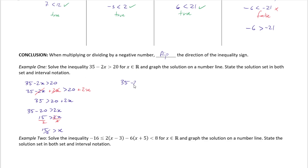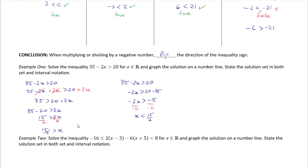Alternatively, starting from 35 − 2x > 20, subtract 35 from both sides to get −2x > 20 − 35, which is −2x > −15. Now divide both sides by −2 — and because we're dividing by a negative number, we flip the inequality sign — giving x < 15/2. Either way, we arrive at the same answer: x < 15/2.